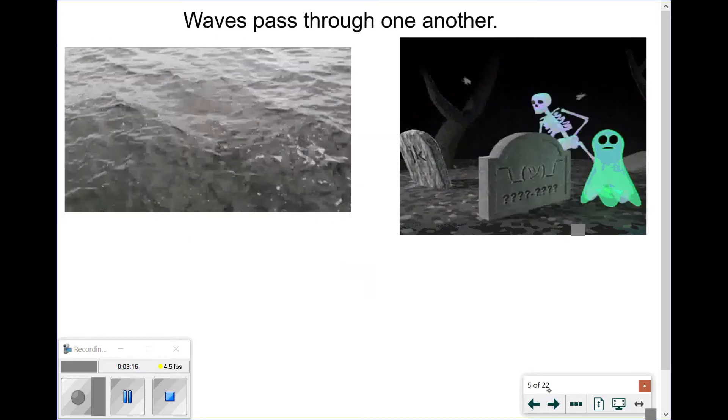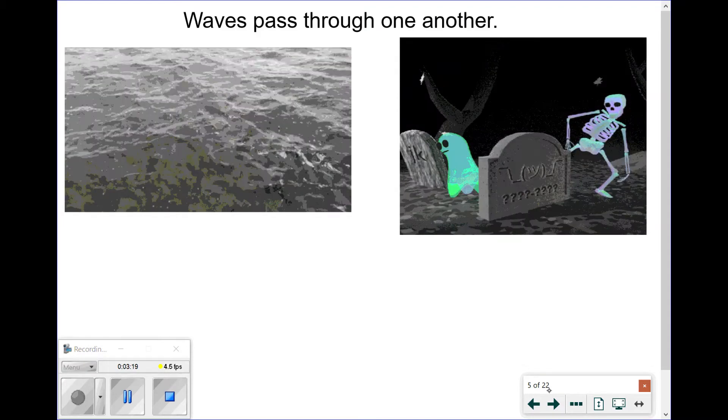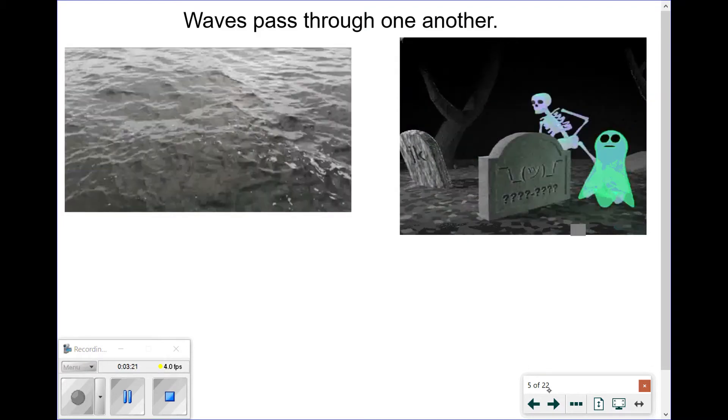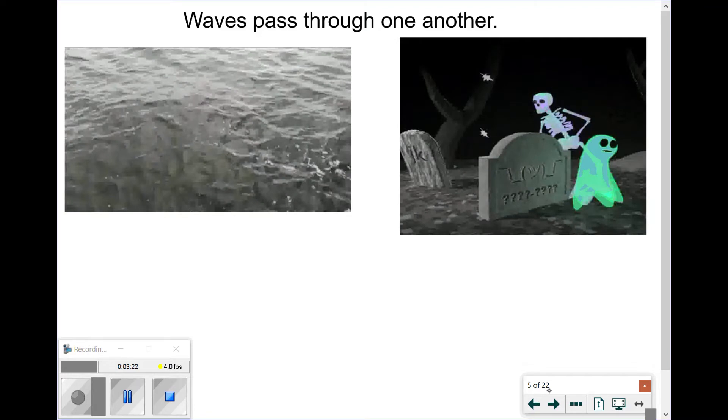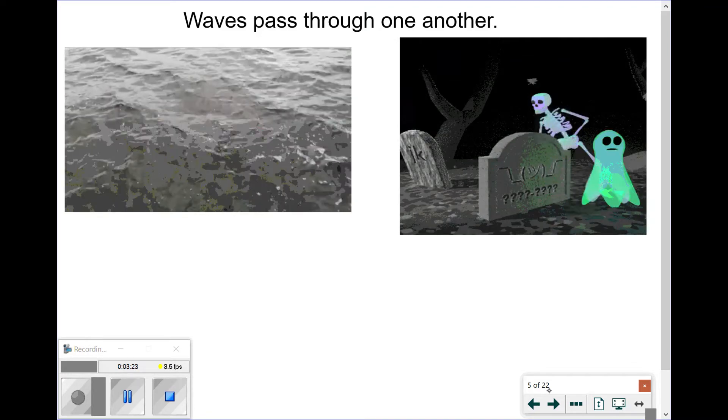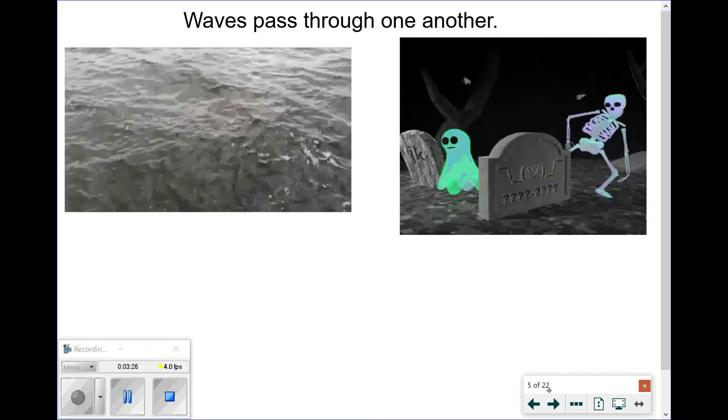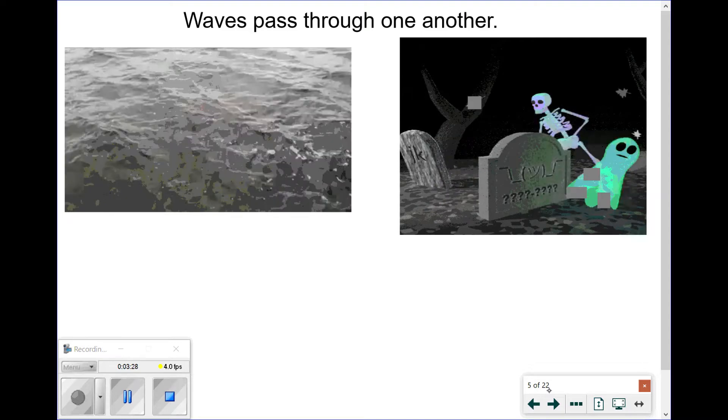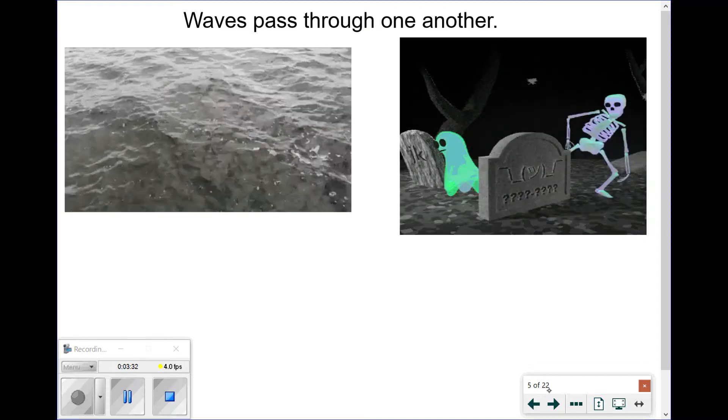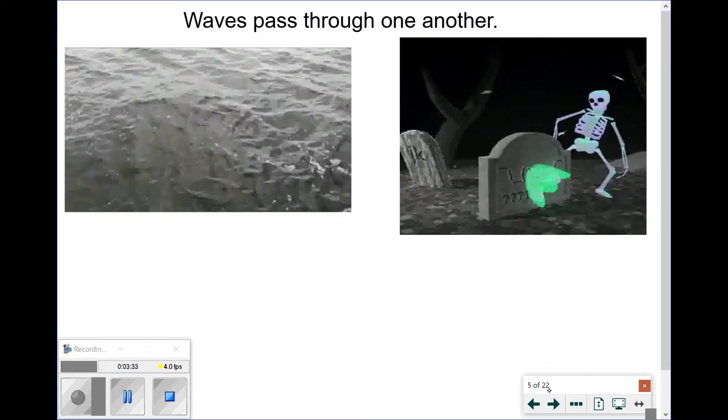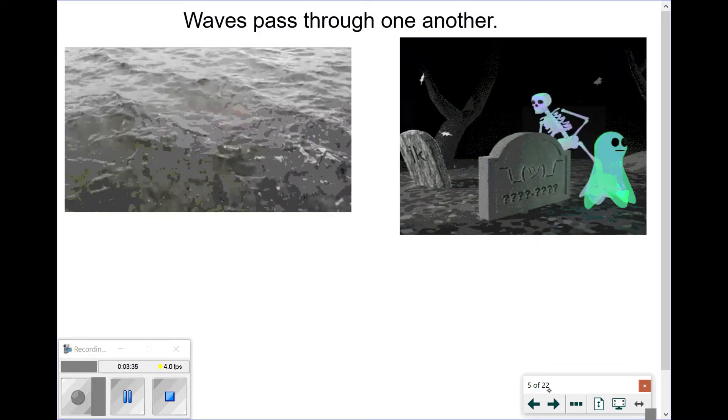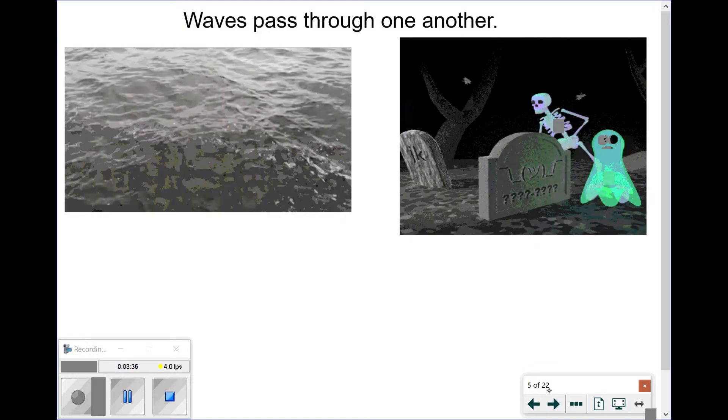Waves, however, do pass through one another. Here we see water waves that are rippling through and we can see areas where the waves get higher, where the water level gets bigger and little valleys that are formed within the water level. But at no point do we see any damage being done to the water surface, just like the ghost passing through the tombstone. So why is this?